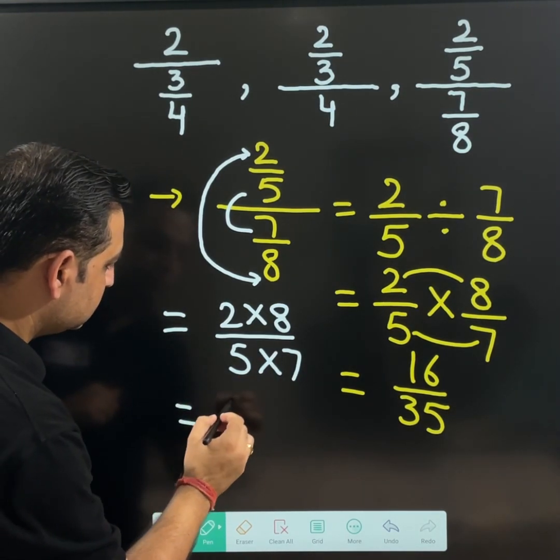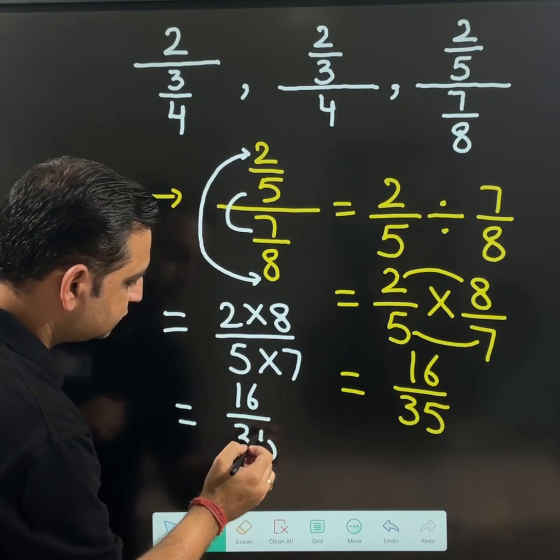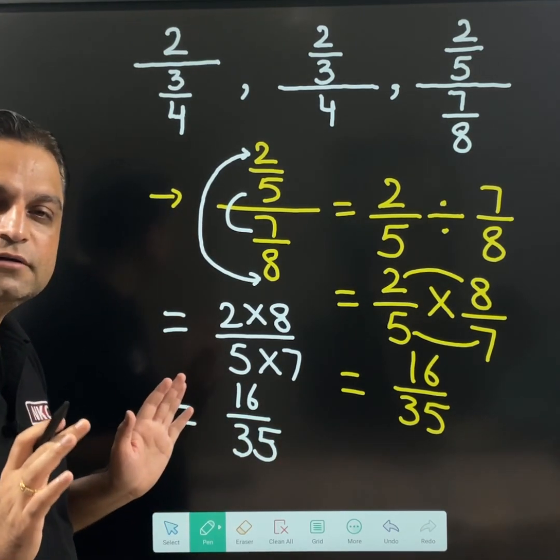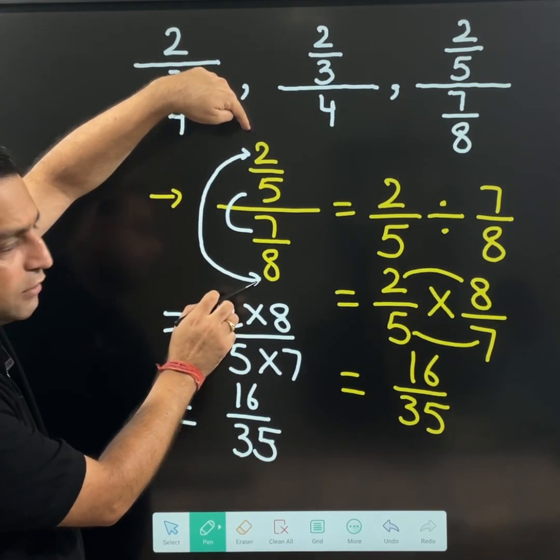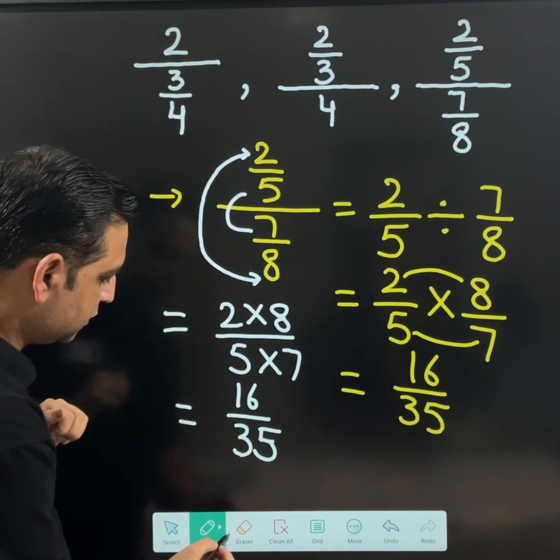You will get the same answer. That means 16 upon 35. I hope this is clear. So do remember top value will be multiplied with bottom value and middle 2 will be multiplied with each other.